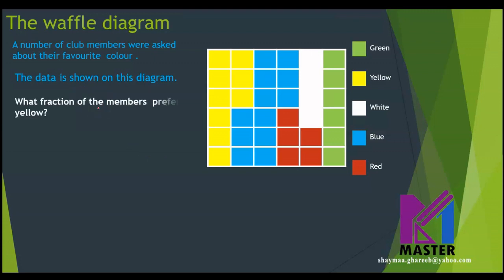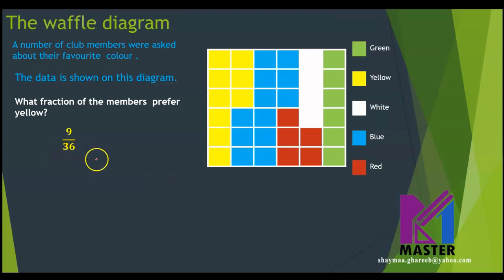Let's see the meaning of this through the first question: What fraction of the members prefer yellow? I will go to the yellow. How many parts of yellow do I have? 1, 2, 3, 4, 5, 6, 7, 8, 9. I have 9 parts out of how many parts in total? It will be 9 over 36 — I have 36 parts in total. I can also write it in the simplest form as 1 over 4. So the waffle diagram shows us information as a fraction of a total, and we can also change it into a percentage. But actually, we cannot tell how many members exactly preferred yellow — they could be 9 or they could be more or less. I don't know the actual number of members yet.